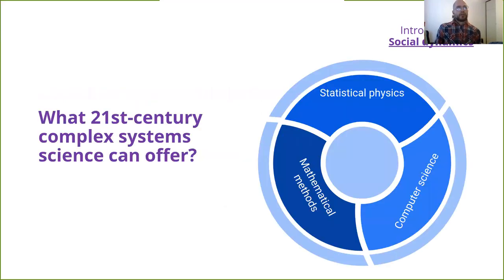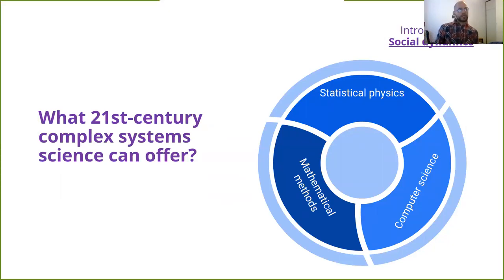The question then is: what can 21st-century complex systems science offer? There are at least three big components: statistical physics, mathematical methods in a more general sense, and computer science. Other life sciences such as geology also play a role.